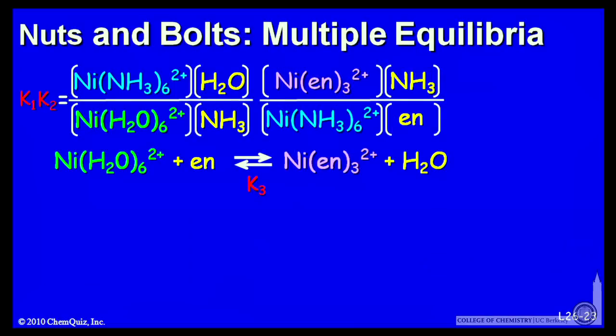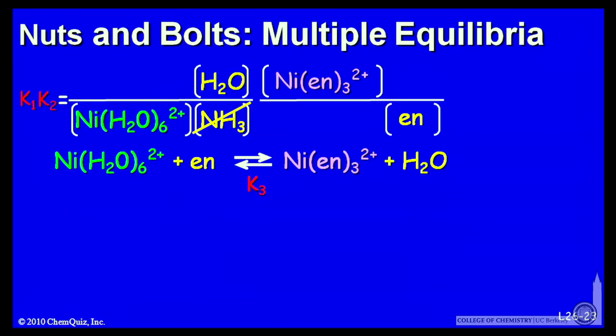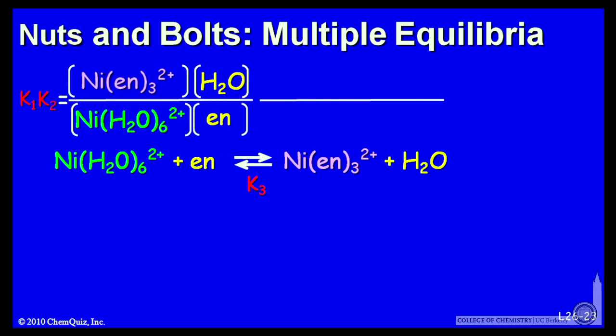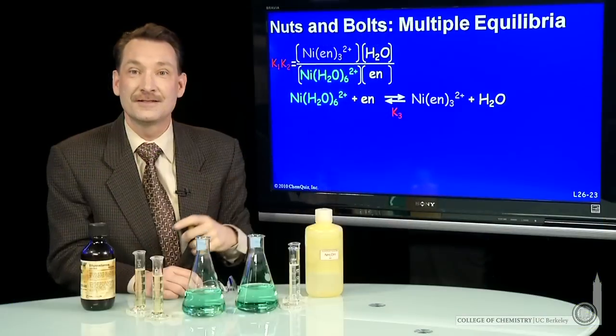Let's see if things cancel out appropriately. We can get rid of the nickel ammonia complex and the ammonia ions. Then group everything together. Indeed, it looks like K1 times K2 equals K3.